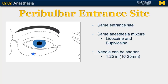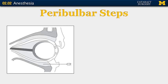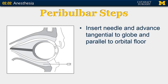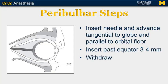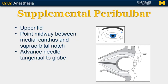The entrance site is the same as for a retrobulbar block, and you can use the same anesthetic mixture. The needle can be shorter — 1.25 inches, or anywhere from 16 to 25 millimeters. Steps include inserting the needle, advancing tangential to the globe and parallel to the orbital floor, inserting the needle about 3 to 4 millimeters past the equator, withdrawing the plunger, and injecting 4 to 8 cc's of the anesthetic, then compressing the eye. You can also add supplemental peribulbar anesthesia in the superior extraconal space through the upper eyelid, at the point midway between the medial canthus and the supraorbital notch, though this is rarely done.